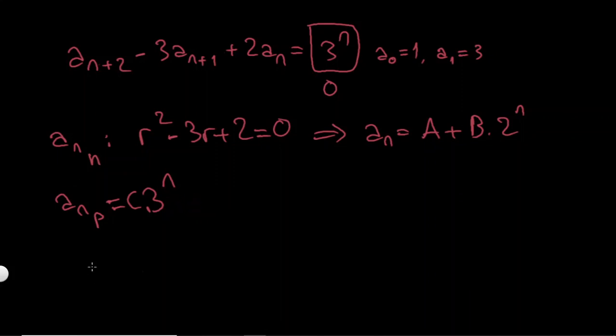So my general solution of a_n is going to be just adding both of these up. So I will have A plus B times 2 to the n plus C times 3 to the n.